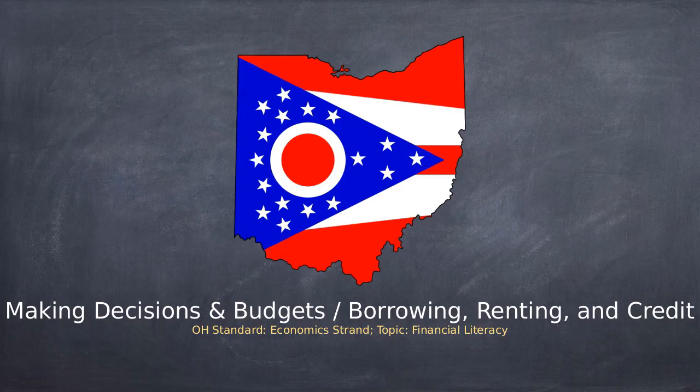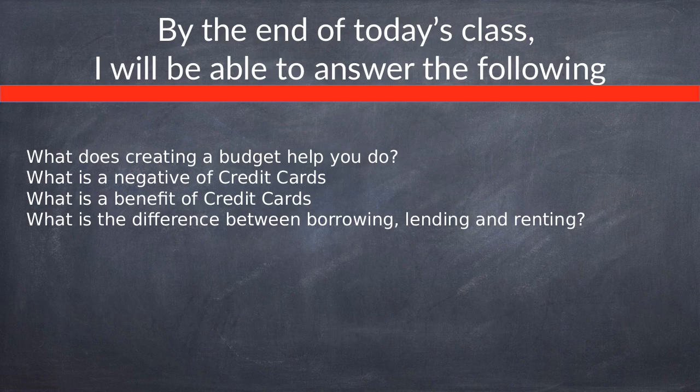So now what we're going to do is talk today about making decisions, budgets, borrowing, renting, and credit. And I know that's a lot. The Ohio State Standard is your economic strand and the topic of financial literacy. So we're going to go ahead and get started.